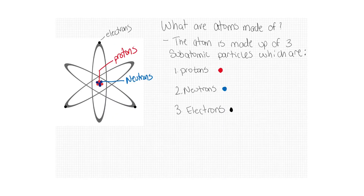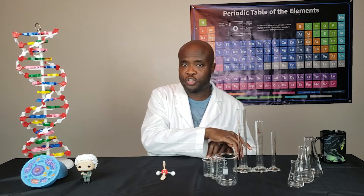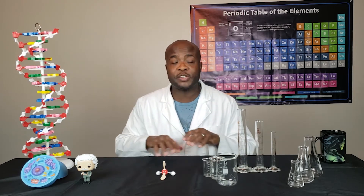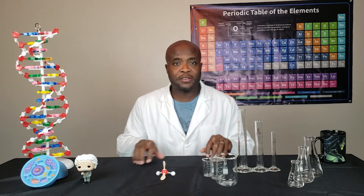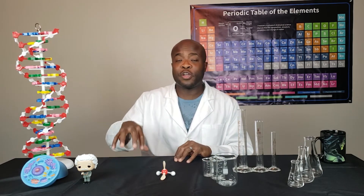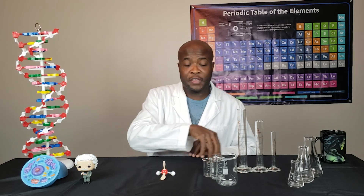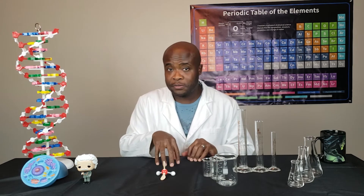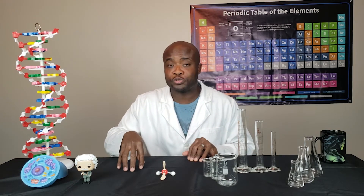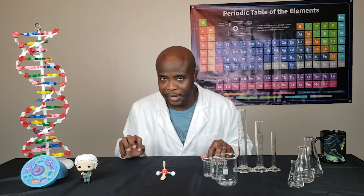Now, what are atoms made of? An atom is made up of three subatomic particles: protons, neutrons, and electrons. I did want to make a correction — when I was explaining the three states of matter and said they are made up of subatomic particles called atoms, I jumped the gun with the term subatomic. The states of matter are made up of atoms, but atoms are made up of subatomic particles called protons, neutrons, and electrons.